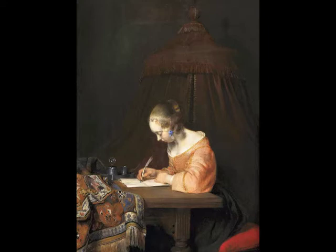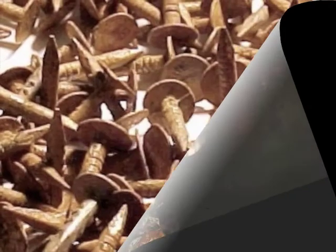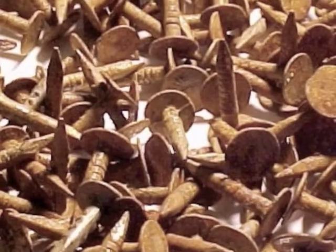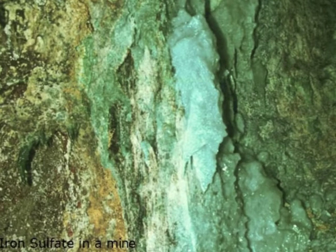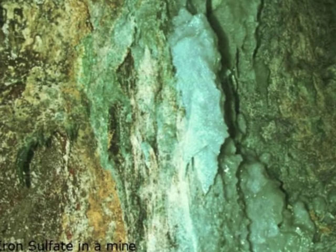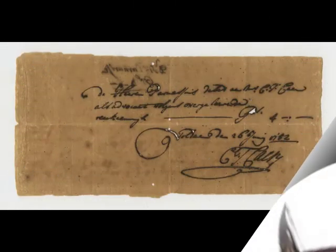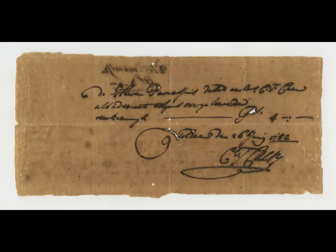Iron gall ink is a historic ink that has been used extensively until the 20th century. Due to its aggressive chemical components — both iron and acid — it can show damage at and near the ink lines. This phenomenon is called ink corrosion.